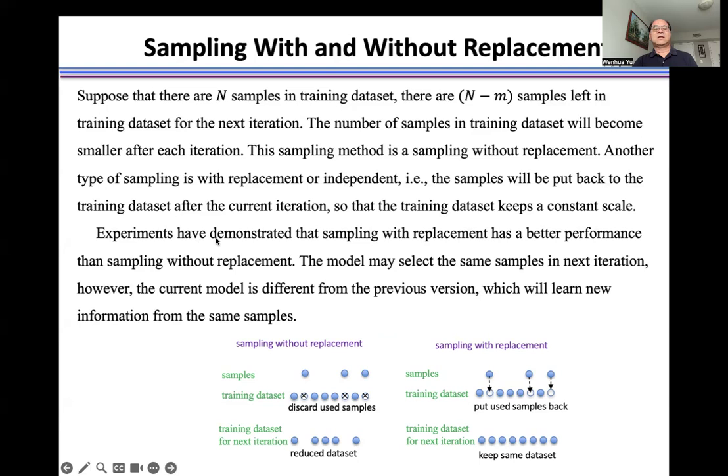Experiments have demonstrated that sampling with replacement has better performance than sampling without replacement. The model may select the same samples in the next iteration. However, the current model is different from the previous version, which will learn new information from the same samples.